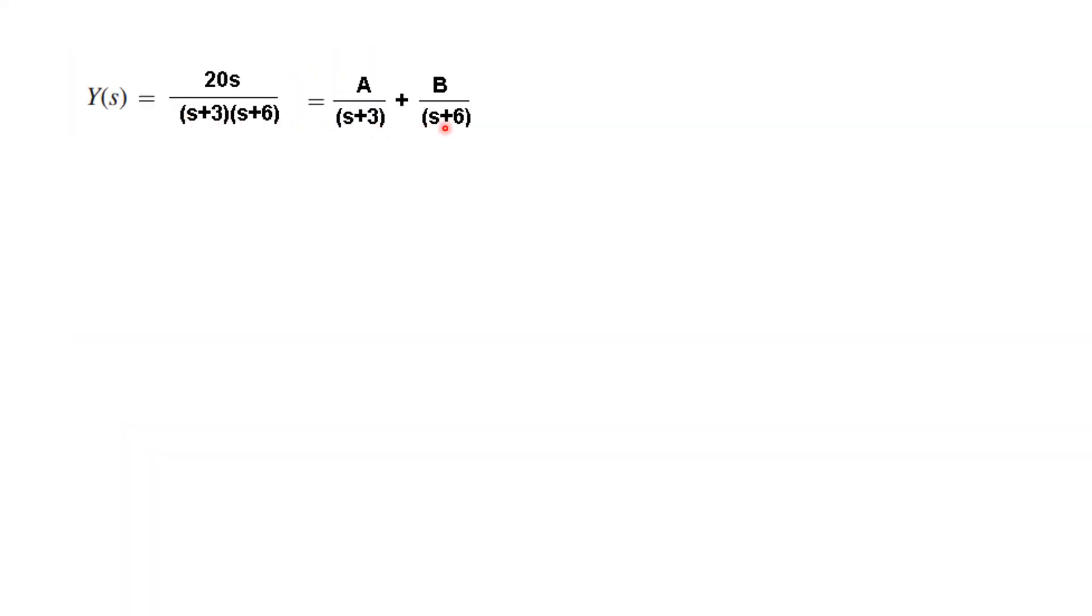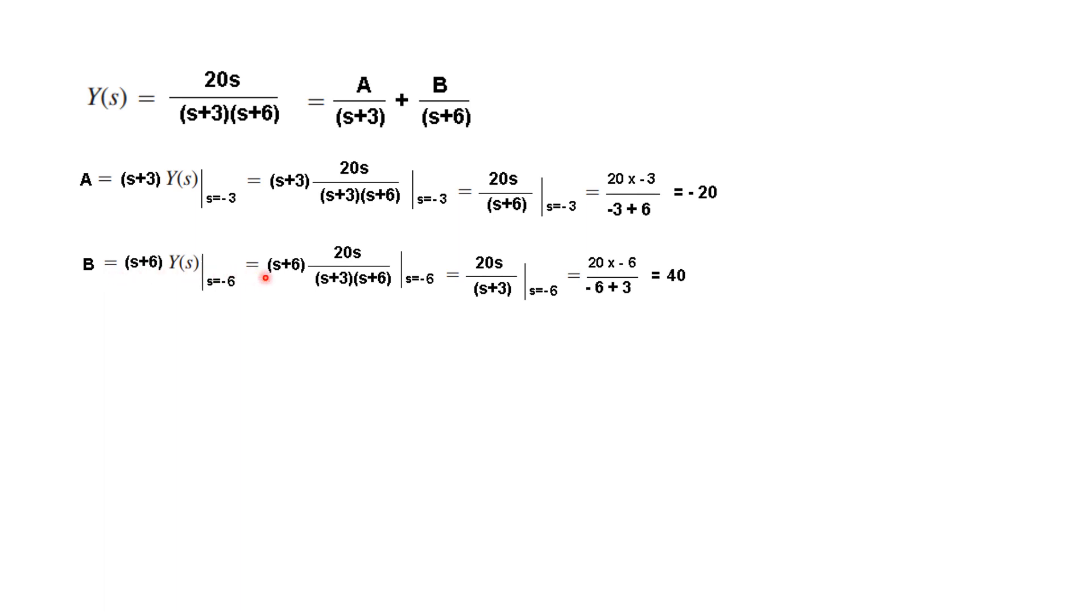Now we will take the help of partial fraction. And we will find the value of A and B by the procedure that we have already learned. So just keep on following that procedure. So A is minus 20. Similarly B, we get 40. Therefore Y(s) is minus 20 over (s+3) plus 40 over (s+6), putting the value of A and B here. And now we can easily take the inverse Laplace transform. So this is the answer. This is the output in time domain.